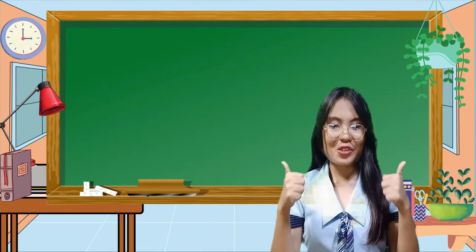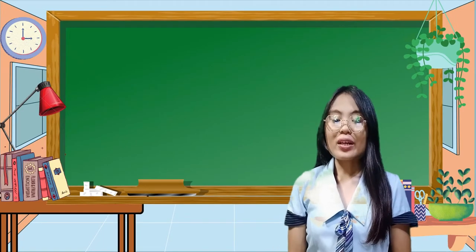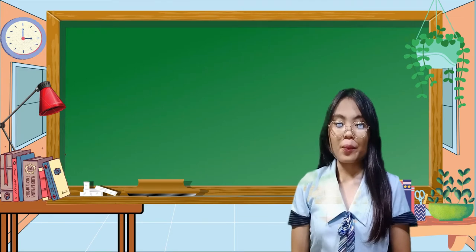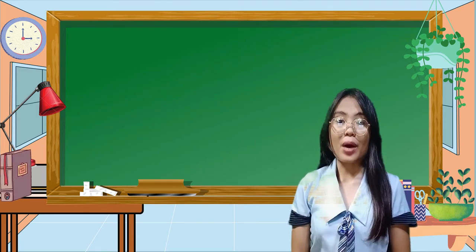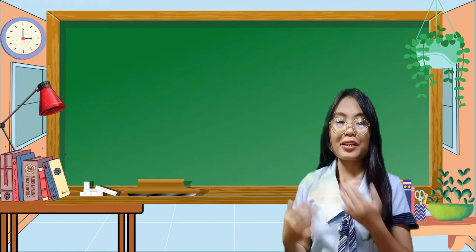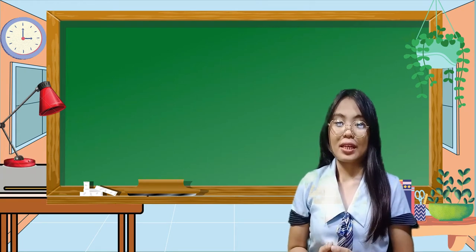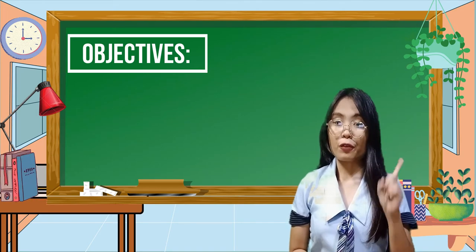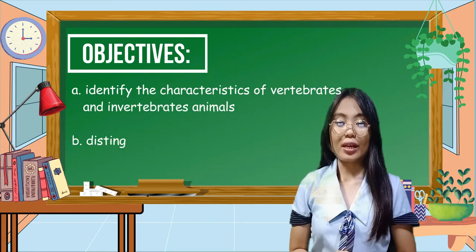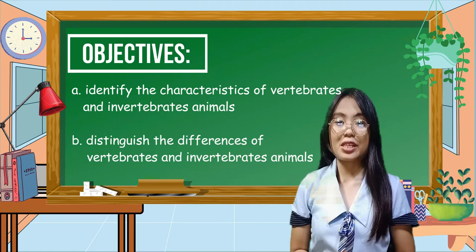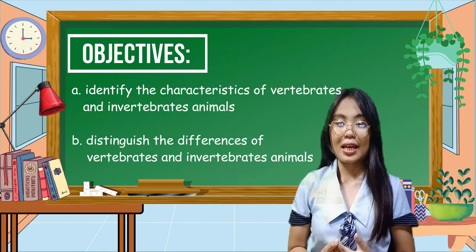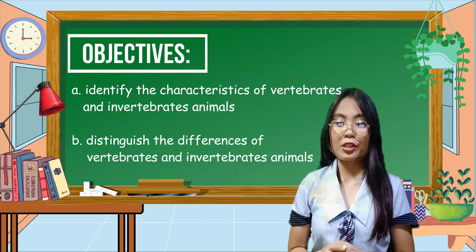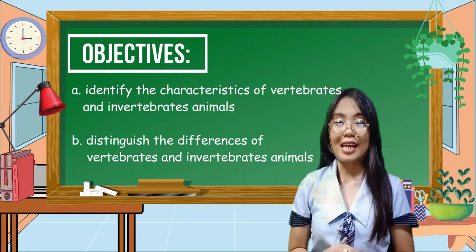Great job students! Now, let us proceed to our new lesson. This time, we will discuss all about vertebrates and invertebrates animals. The desired learning outcomes for this lecture are: first, identify the characteristics of vertebrates and invertebrates animals; and second, distinguish the differences of vertebrates and invertebrates animals.